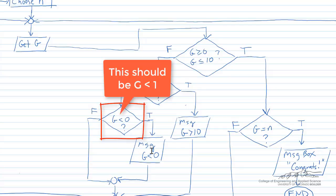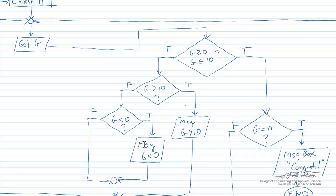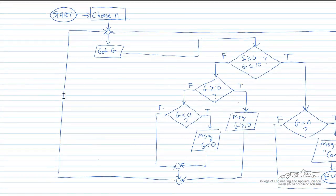If that's true, then we have a message box, something like your guess was less than 0, please try again. In either case, we go back up to the loop and ask the user for another guess.